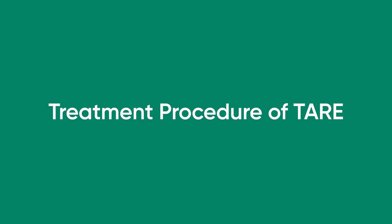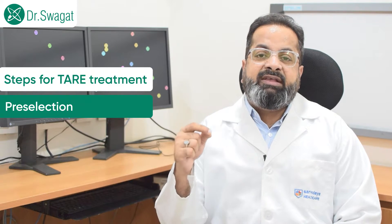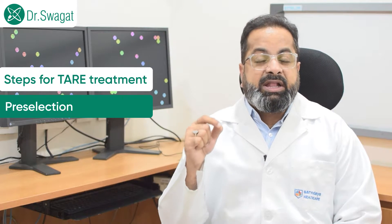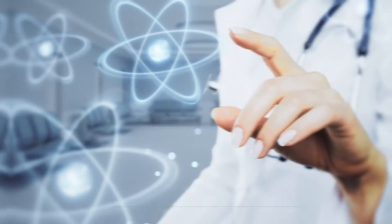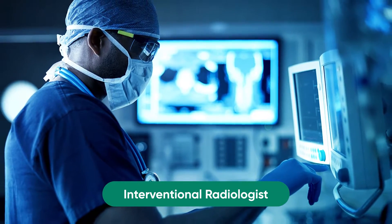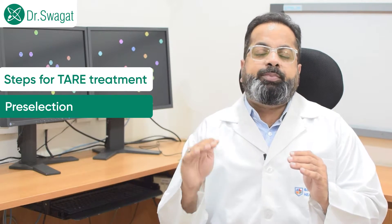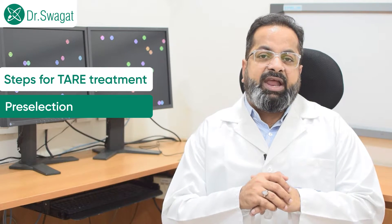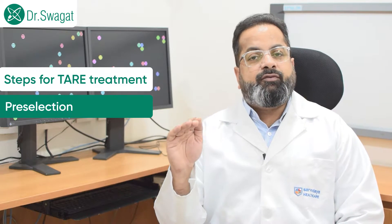TARE is performed in 4 steps. Number 1 is pre-selection — deciding which patient is a fit candidate for TARE. This has to be decided by a team of treating doctors that should include: medical oncologist, surgical oncologist, radiation oncologist, liver specialist (hepatologist), nuclear medicine physician, and interventional radiologist. They commonly discuss the case, and when they think this patient should be tried for TARE, then comes patient selection — determining whether that particular patient is a suitable candidate for TARE or not.